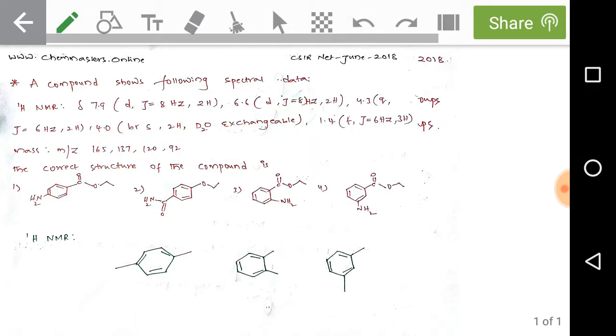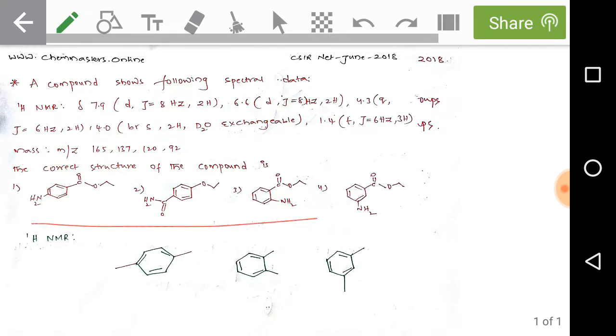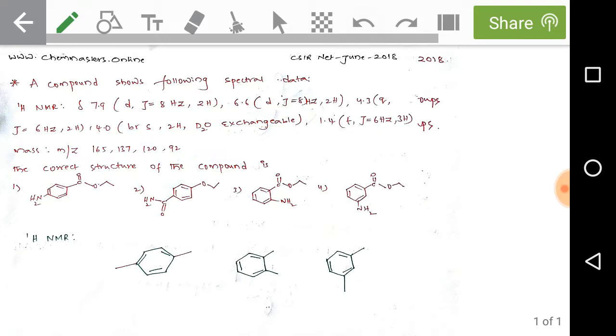Using this HNMR and mass spectral data, we need to find the correct structure from the given options. Let's check the HNMR spectral data.